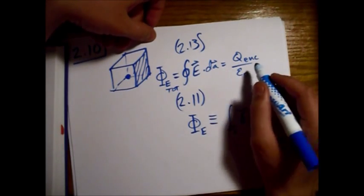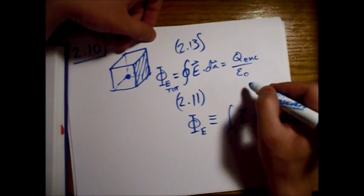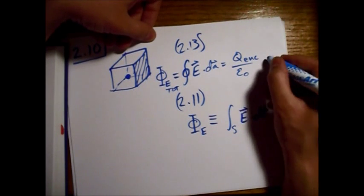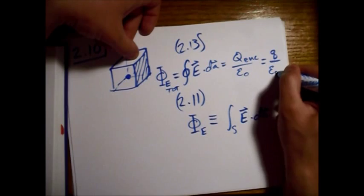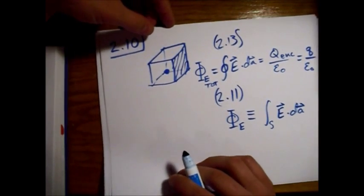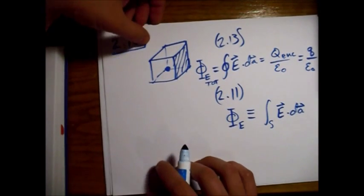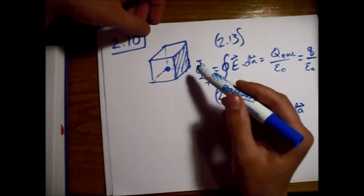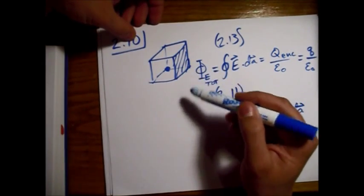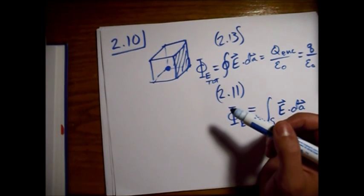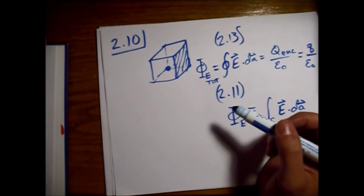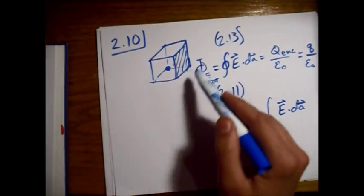And the total flux is equal to the charge, in this case little Q, over epsilon naught. So really the key to this problem is to just look at the symmetry of it, because it's sort of an isotropic problem, no preferred direction.